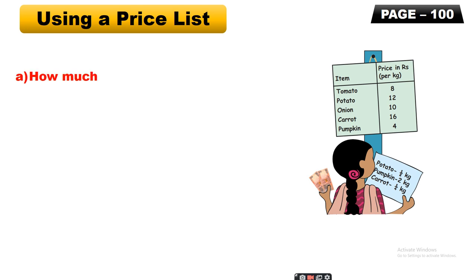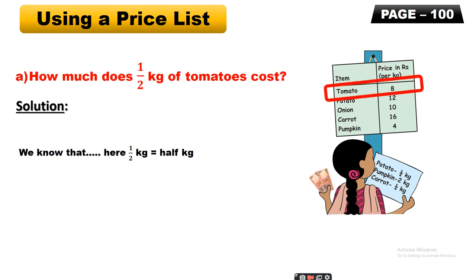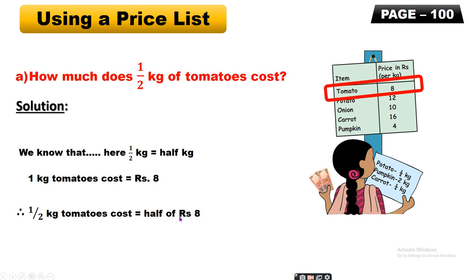Using a price list. Question number A: How much does half kg of tomatoes cost? We know that half kg means 1 upon 2 kg. One kg of tomatoes costs rupees 8, so half kg tomatoes cost equals half of rupees 8.